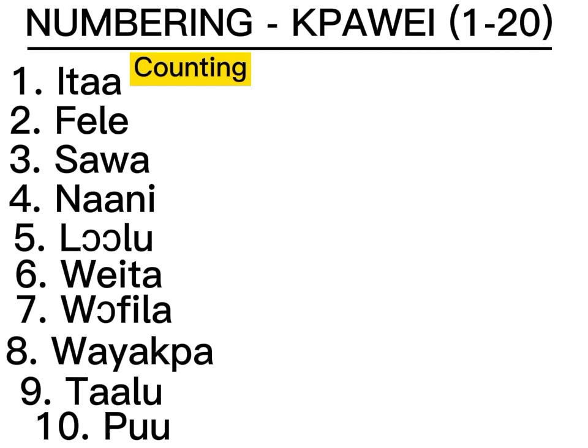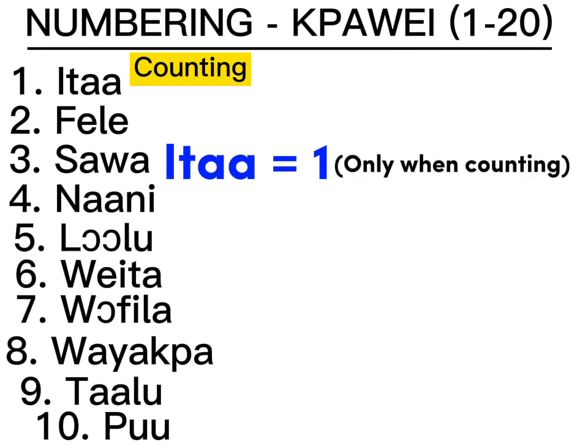Mind you, when we count in Mende, the number one has some unique differences. When we say Ita in Mende, we mean one. We only use this word to refer to one when we are counting — as you are counting something: one, two, three, four, five, six — you start with Ita. But when you are giving the description of the amount of something or anybody or anything, you have to say Yila.